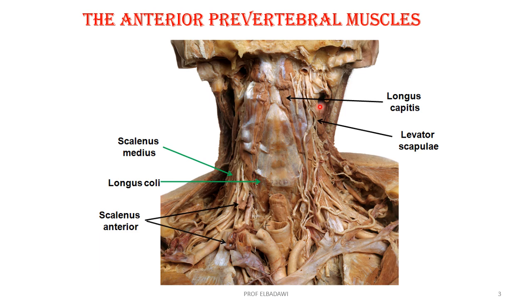That is a cadaveric specimen showing some of these muscles: the longus capitis muscle, the levator scapulae, the scalenus medius here. The two parts of the scalenus anterior are shown after we cut part of it to show the brachial plexus deep to it. The subclavian artery will be the one going this way. This is the common carotid. This is the subclavian. On the other side, that is the scalenus anterior here, with the subclavian artery passing deep to it. This is the subclavian vein, separated from the artery by the scalenus anterior muscle.